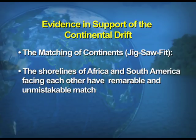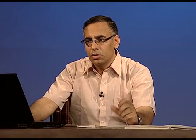He talked about the age of some rocks having similar ages across the oceans. He also talked about tillite — the sedimentary rocks formed out of the deposits of glaciers — which are found in the Gondwana system of sediments. India's tillite deposits are known to have their counterpart in six different land masses of the southern hemisphere, clearly demonstrating remarkable similar histories of these land masses.